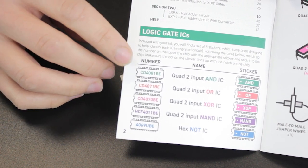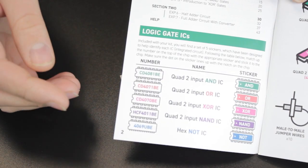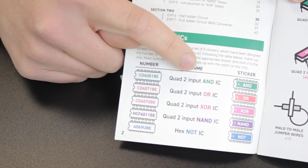The booklet contains instructions for identifying each of the individual Logic Gate chips. We're going to show an example now of the AND gate.